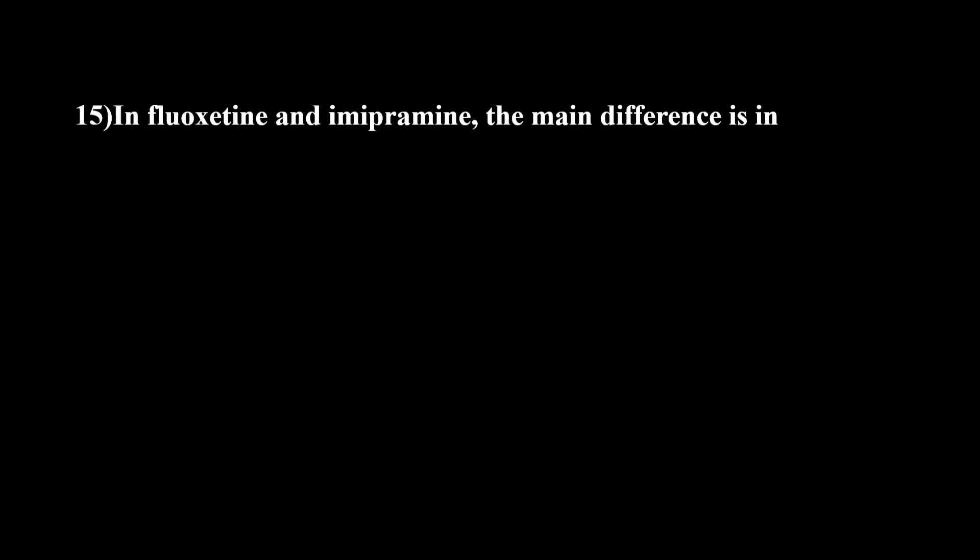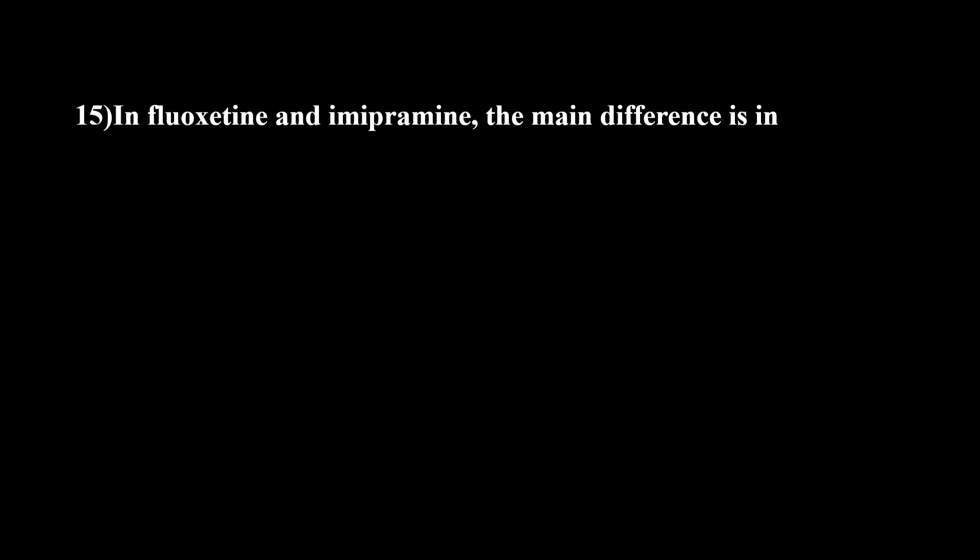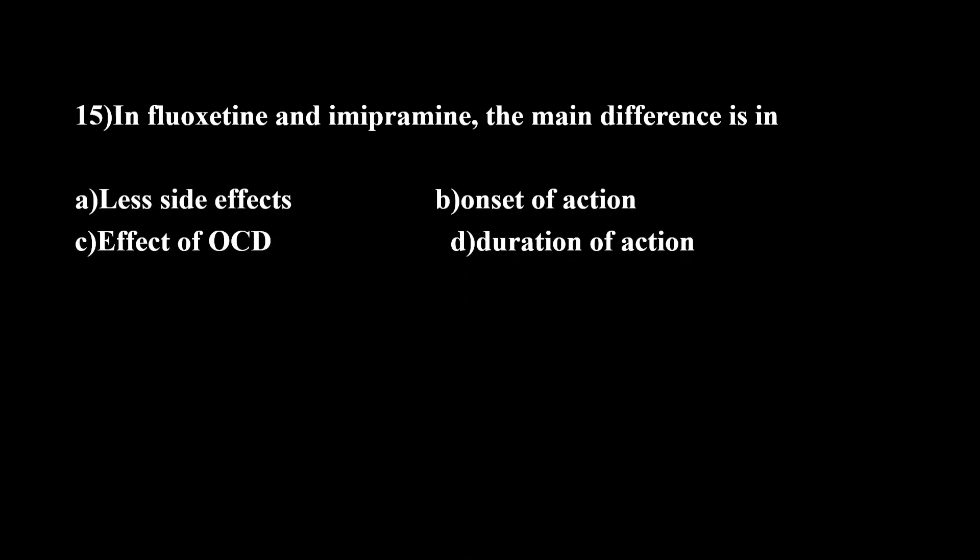Last question: In Fluoxetine and Imipramine, what is the main difference? The key difference is the side effect profile. Imipramine has significant anticholinergic side effects, while Fluoxetine has fewer side effects. So the main difference between these two antidepressants is their adverse effect profiles — less side effects is the correct answer differentiating Fluoxetine from Imipramine.